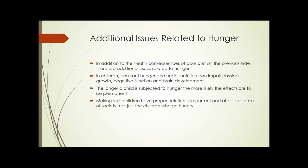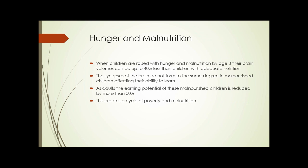Making sure children have proper nutrition is important and affects all areas of society, not just the children who go hungry. When children are raised with hunger and malnutrition, by age three their brain volumes can be up to 40 percent less than children with adequate nutrition. The synapses of the brain do not form to the same degree in malnourished children, affecting their ability to learn. As adults, the earning potential of these malnourished children is reduced by more than 50 percent, creating a continuous cycle of poverty and malnutrition.